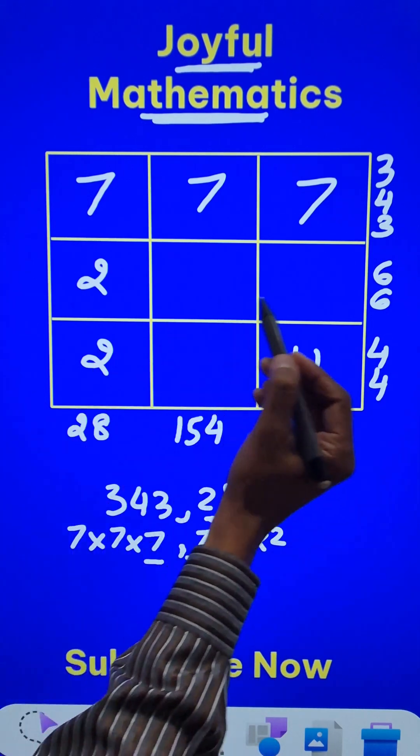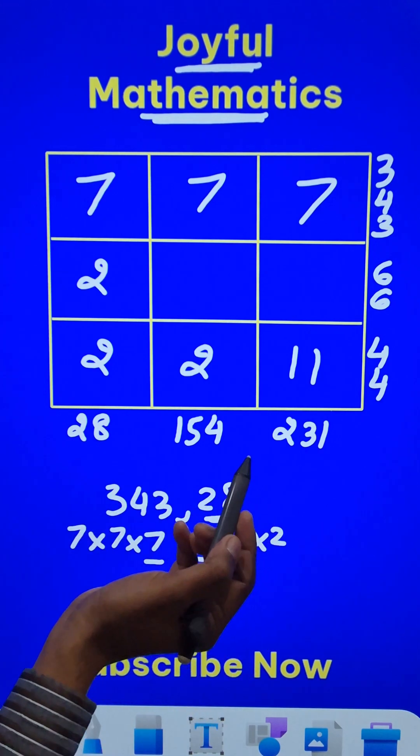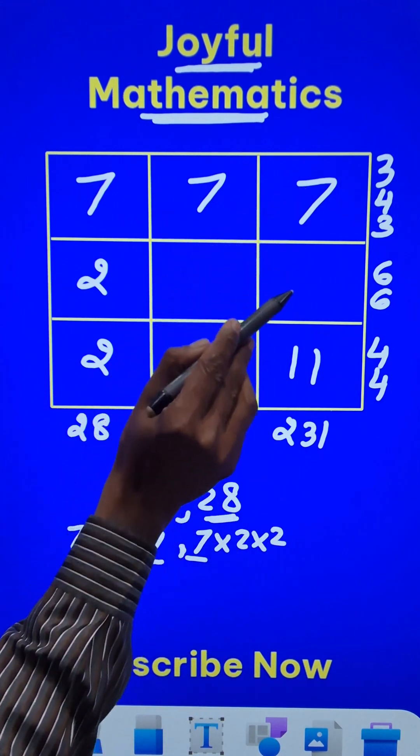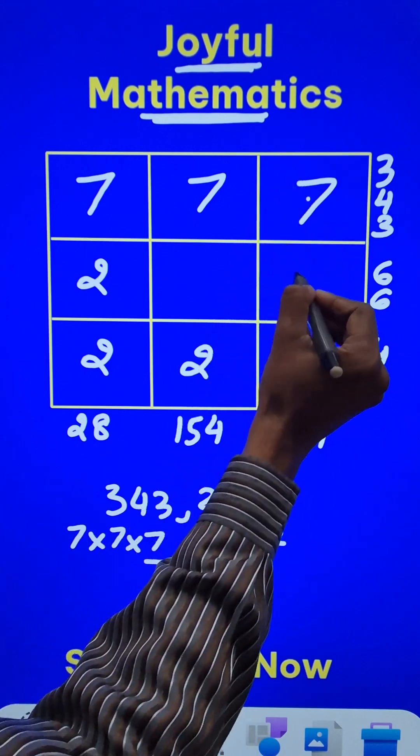And now 11 times 2 is 22. How do I get 44? I have to put a 2 here. And rest of it is very easy because you just have to take 7 times 11, which is 77. And 231 divided by 77 will give you a 3 here.